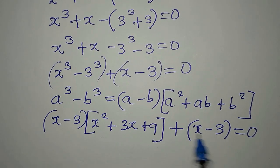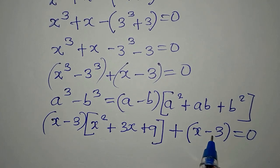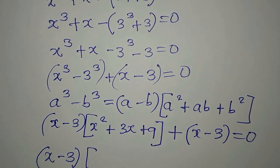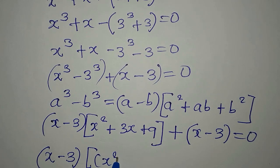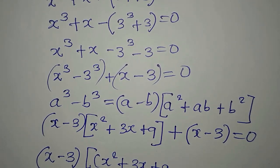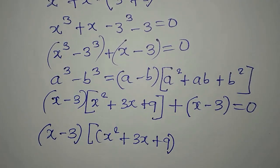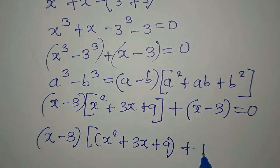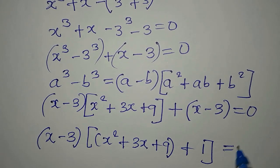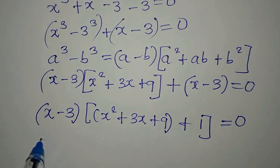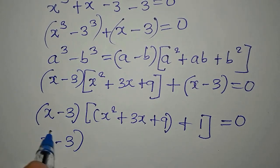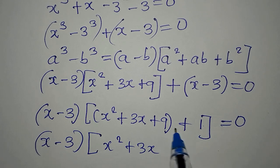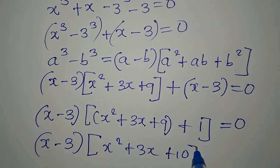From these two terms, x minus 3 is common in both. Let's factorize x minus 3 out. Inside we have x squared plus 3x plus 9, and from the second term we get plus 1 — since x minus 3 divided by x minus 3 gives 1. We close this and equate to zero. So: x minus 3 times x squared plus 3x plus 10 equals zero.